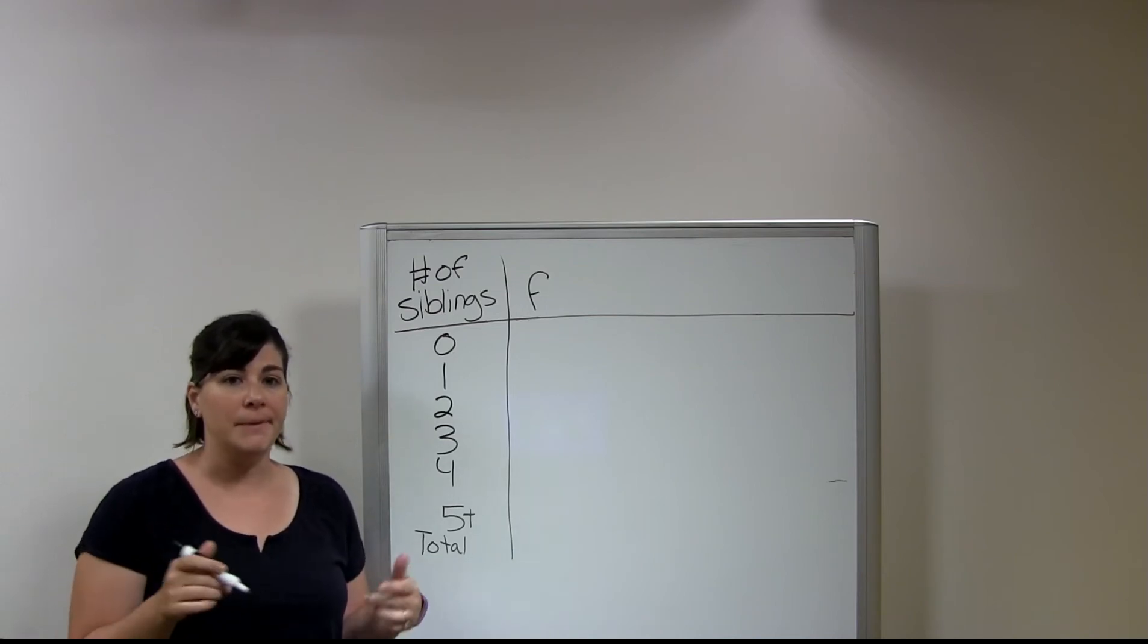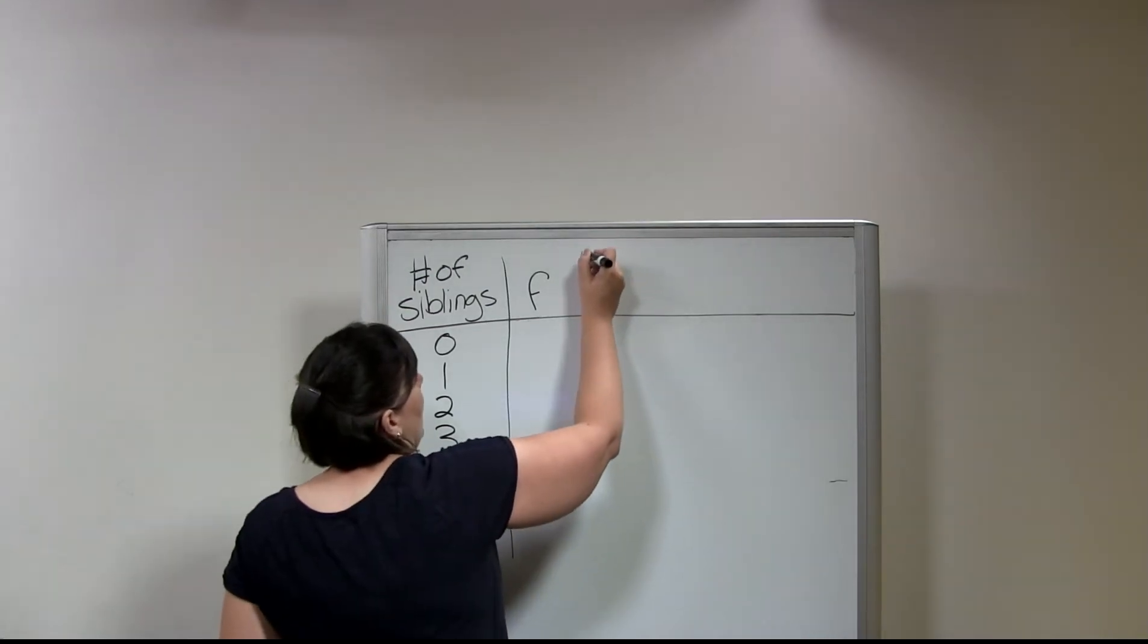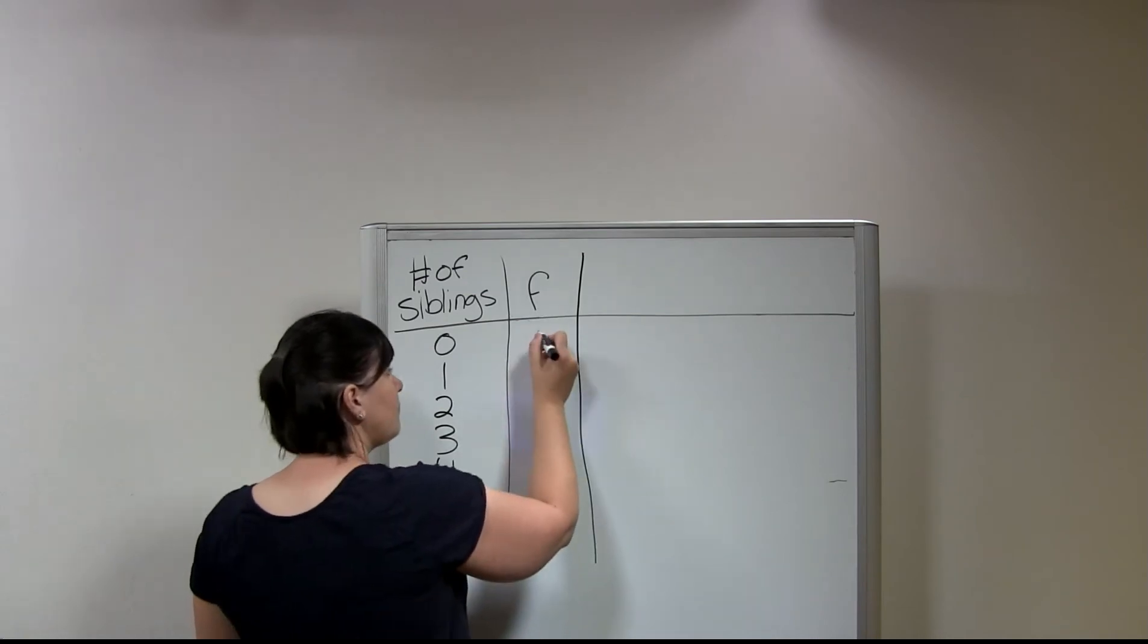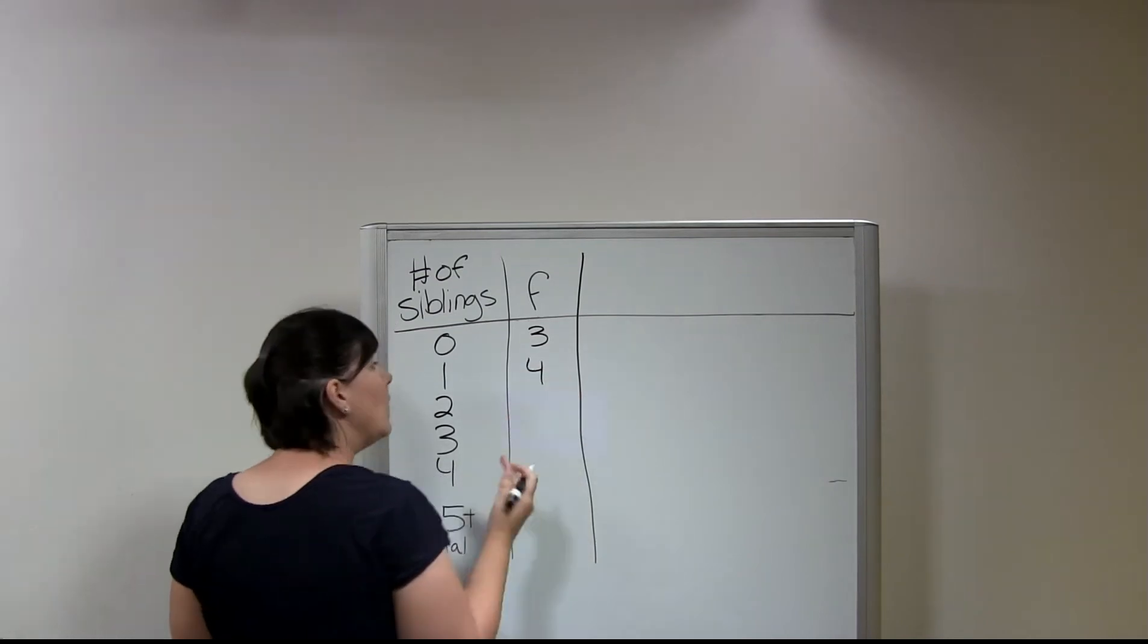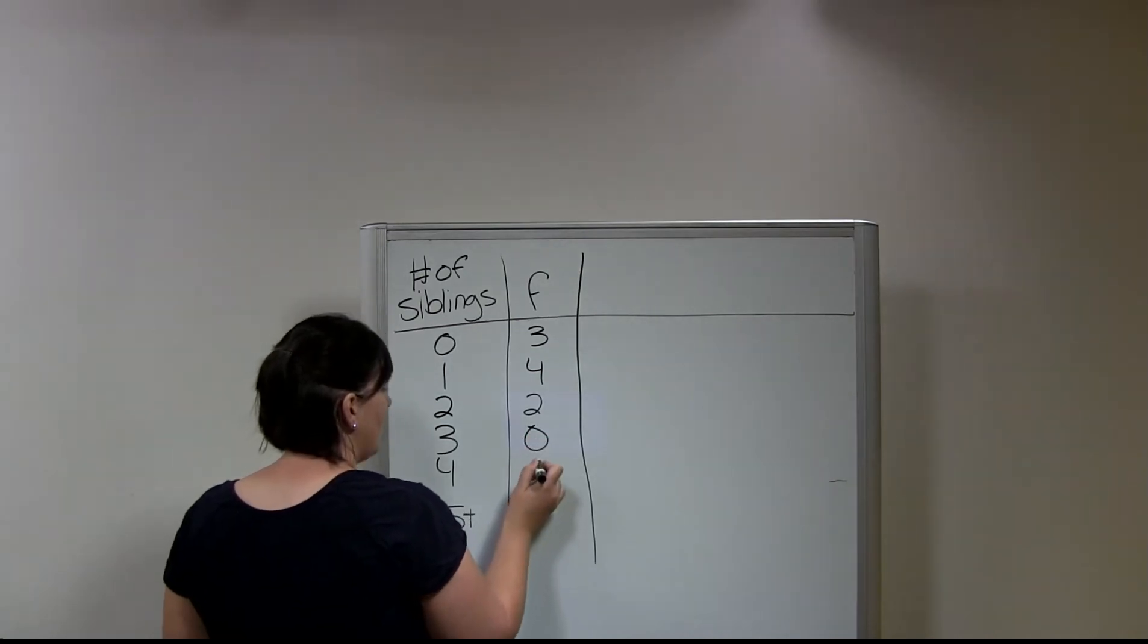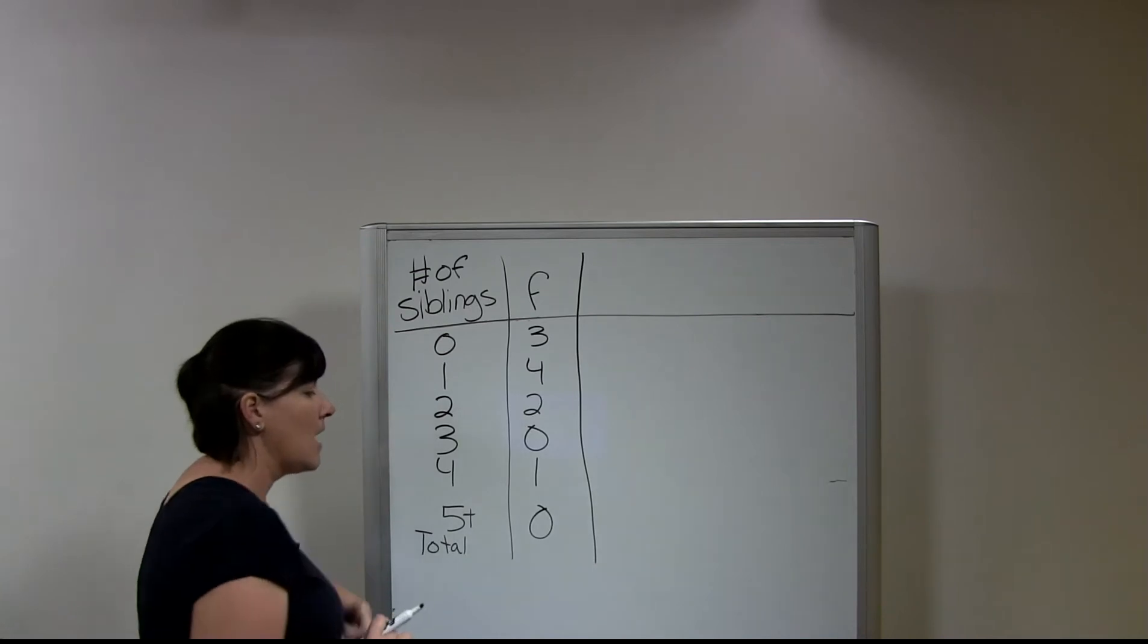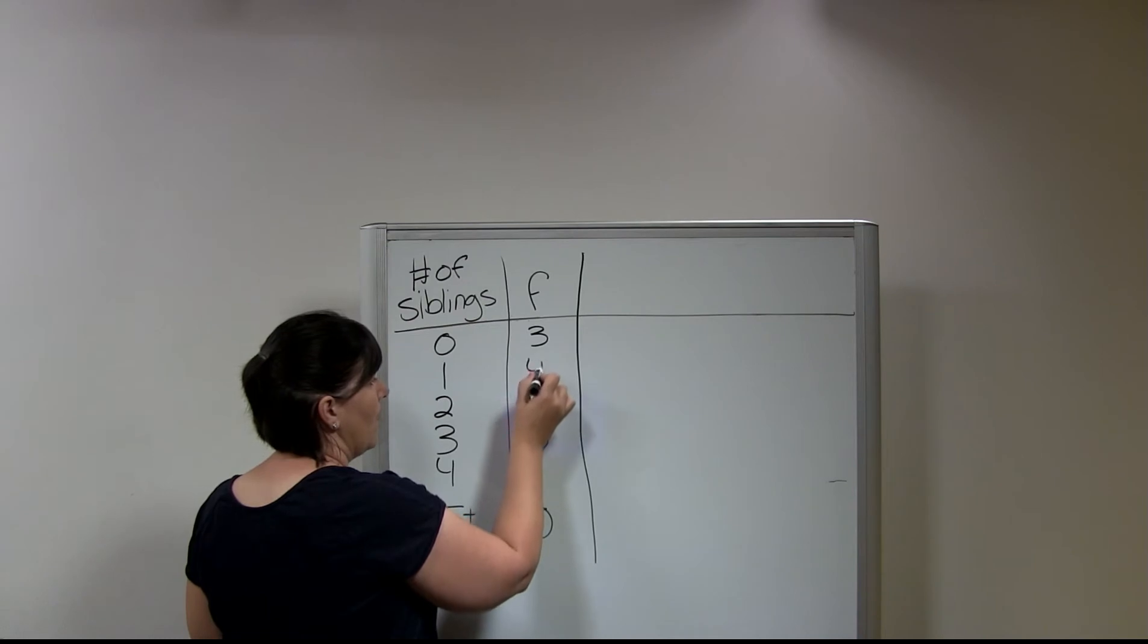And so then my second column here is going to be represented by the letter F. And it is the frequency or how often was this answer choice given. So how many people in this case answered that they have zero siblings? How many people answered that they have one? So this is pretty simple to figure out. If you've got some data, a range, you're just going to go through and count up. How many people said zero? How many people said one? So on and so forth.